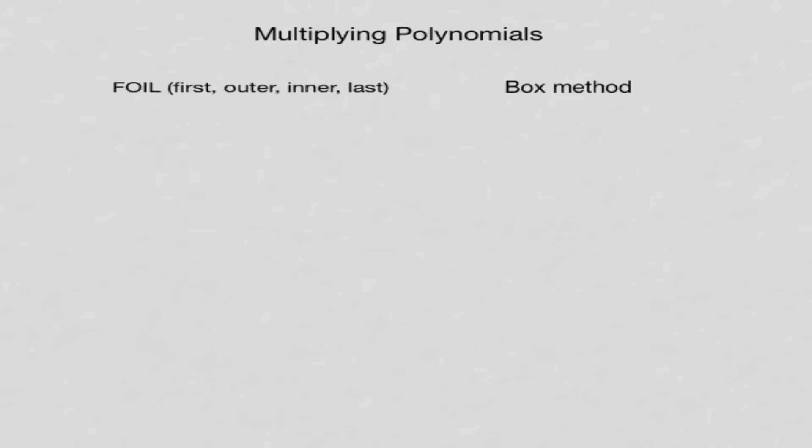One is an older technique and one is a more modern technique. The first technique is called FOIL, which is just an acronym for First, Outer, Inner, Last. The second method is the box method. I'm going to take a problem and do it both ways.